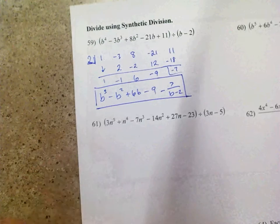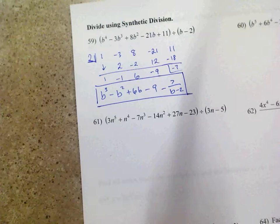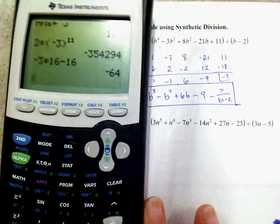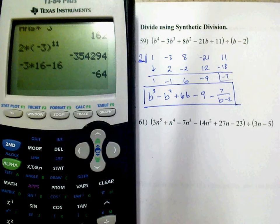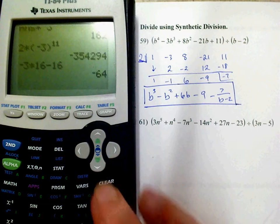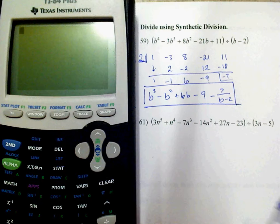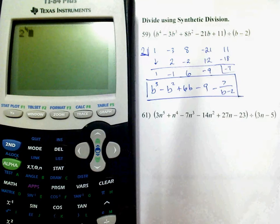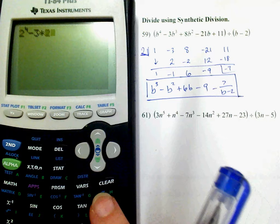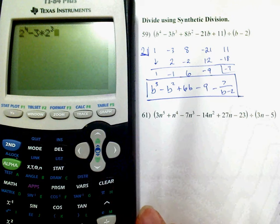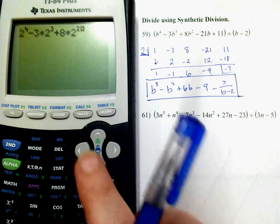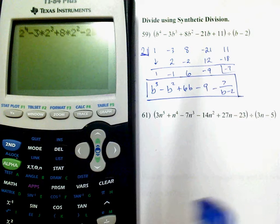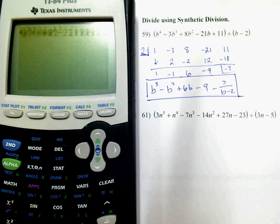Now, if I want to make sure my answer is correct, one thing I can do is use the remainder theorem. If I plug in 2 into the function I should get the remainder. So: 2 to the 4th minus 3 times 2 cubed plus 8 times 2 squared minus 21 times 2 plus 11, and I get negative 7. So we're good.